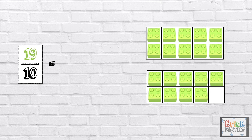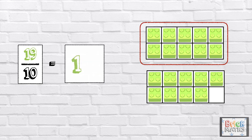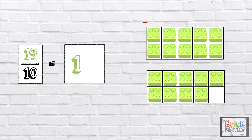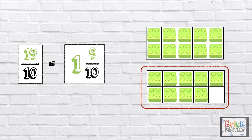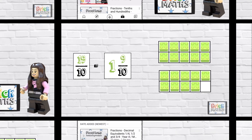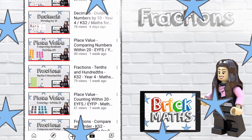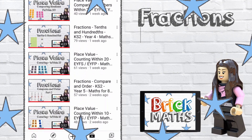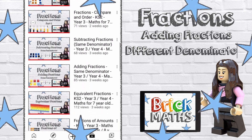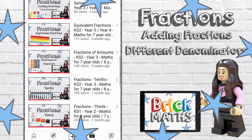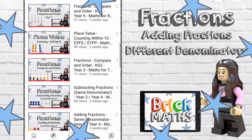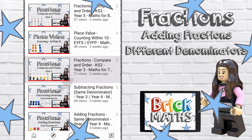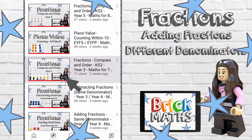We can turn the improper fraction into a mixed number: 1 whole and 9 tenths. So that's it for adding fractions. If you want to keep learning, keep an eye out for more videos by Brick Maths.